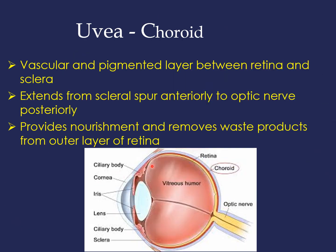The choroid is the most posterior part of the uveal tract. It is a highly vascular and pigmented layer lying between the retina (inside) and the sclera (outside). It extends anteriorly from the scleral spur to the optic nerve posteriorly. The choroid provides nutrition to the outer layers of the retina and removes waste products from them.